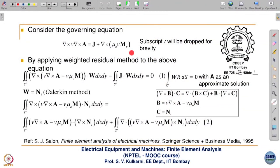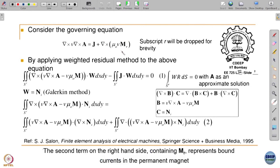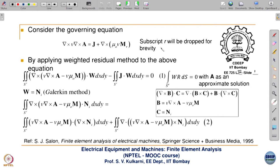Welcome to Lecture 32. In this lecture we will see how to derive the FEM formulation for permanent magnets. We start with the governing equation which we have seen in the previous lecture. J is basically due to free current, and this term represents the source corresponding to the permanent magnet. Henceforth, the subscript R will be dropped — all M henceforth is M_R, subscript R for M is dropped for simplicity.